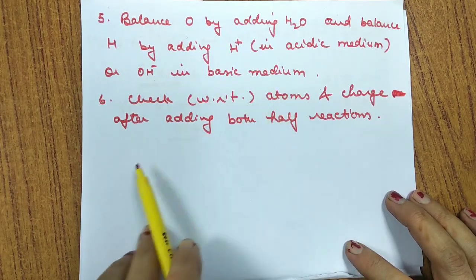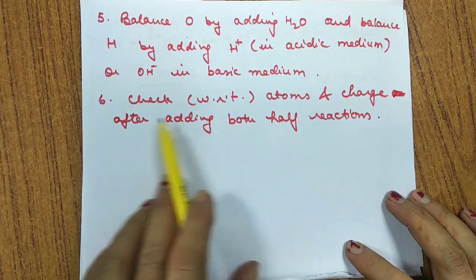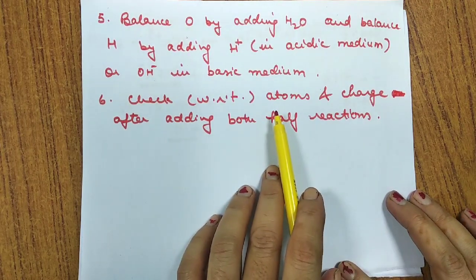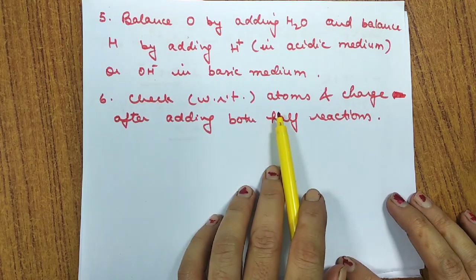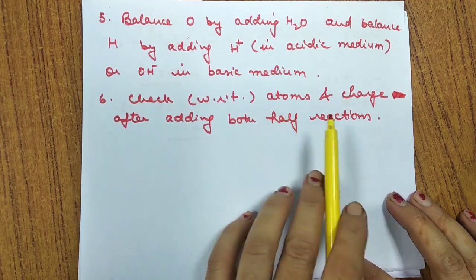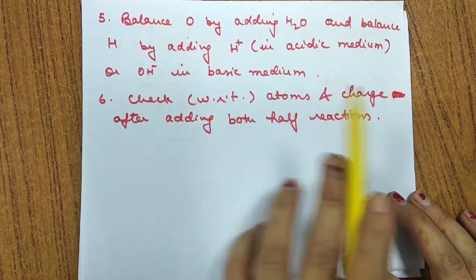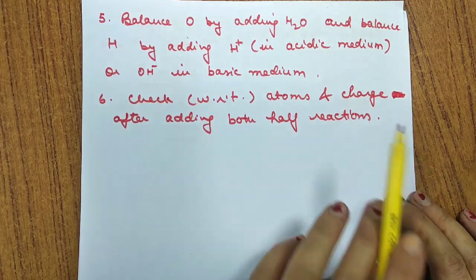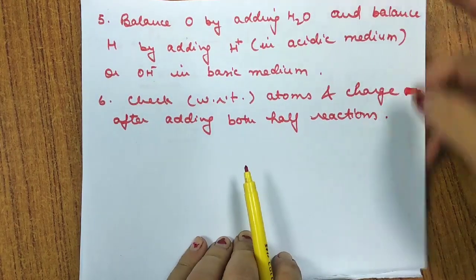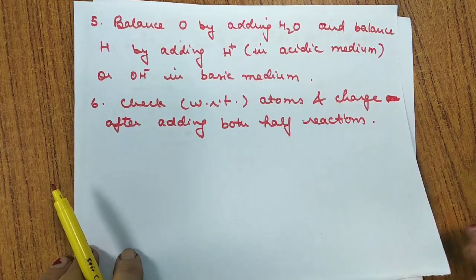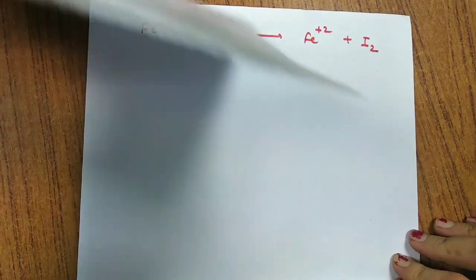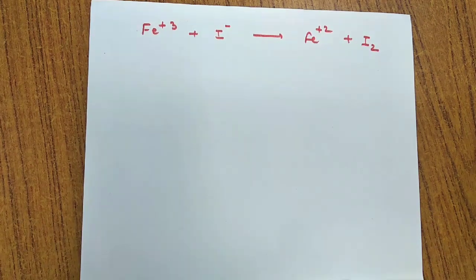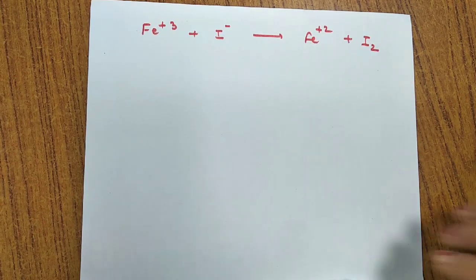Finally, after adding both half reactions together, we check whether the final equation is balanced with respect to atoms and charge. If we have equal numbers of atoms on both sides and equal charge with equal sign on both sides, then the reaction is completely balanced.